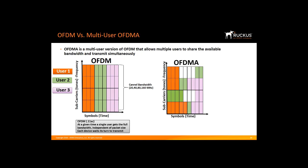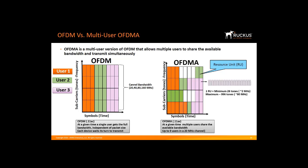In contrast, OFDMA is AP-centric. It enables 11ax APs to simultaneously communicate with multiple devices by dividing each Wi-Fi channel into smaller sub-channels known as resource units, or RUs, sometimes called RU tones. The minimum size of one RU is 26 tones or sub-carriers, which equals approximately 2 MHz. A 20 MHz channel can serve up to 9 users. The AP determines how to allocate the sub-channels, as each individual RU can be utilized for different clients simultaneously. An AP can allocate the whole channel to a single user or partition it to serve multiple devices simultaneously, improving usable throughput for all connected devices.